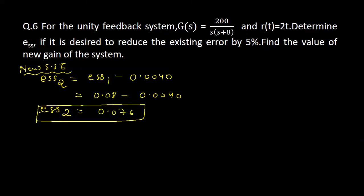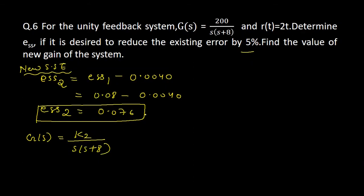This is the new value of steady state error when the actual error is reduced by 5%: E_SS2 = 0.076. Now we have to find the new value of gain K2. The forward path transfer function G(s) will be equal to K2 divided by s(s+8). Since it is a unity feedback system, H(s) equals 1.